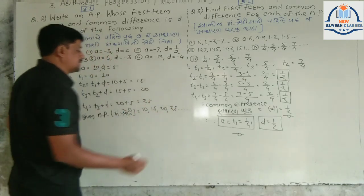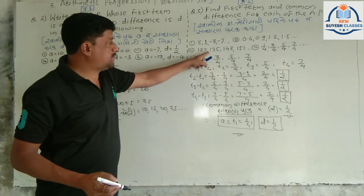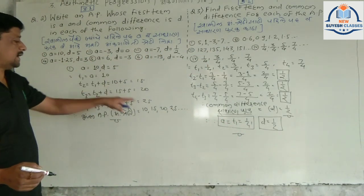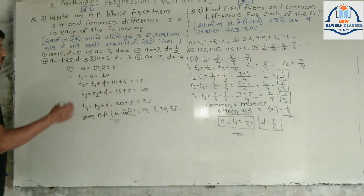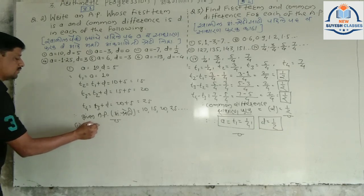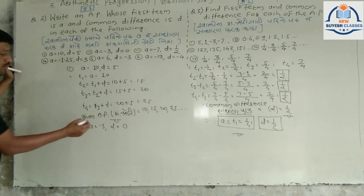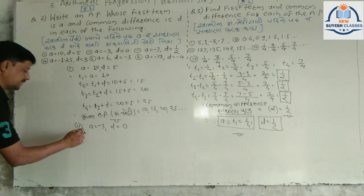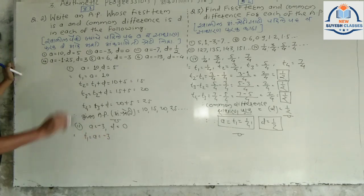This is the AP. Using AP here, the AP is equal to minus 3, D equal to 0. This is the AP created about 0, on the AP.